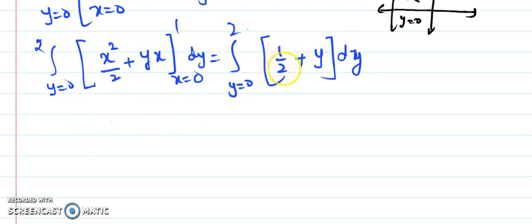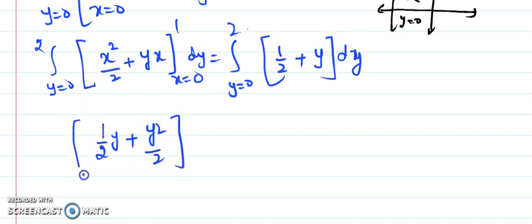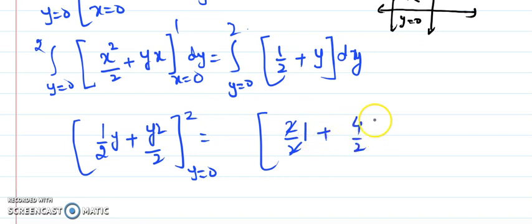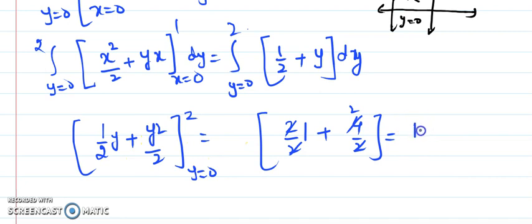Now we integrate (1/2 + y) with respect to y from 0 to 2. Integration gives (1/2)·y + y²/2. Substituting y = 2: (1/2)(2) + (4/2) = 1 + 2 = 3. The lower limit y = 0 gives 0. So the final answer is 3. I hope you have understood these two cases. I will continue with more examples in my next lecture — thank you.